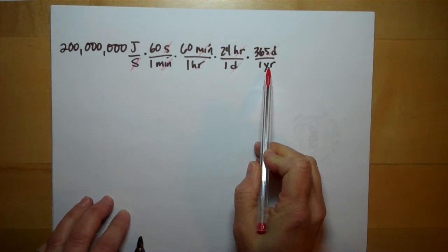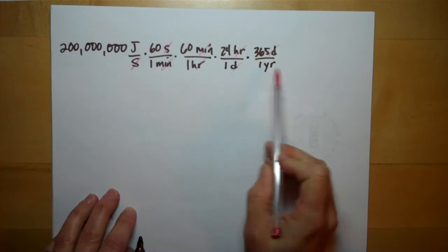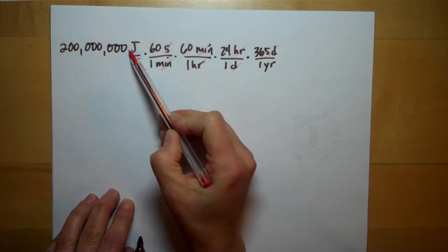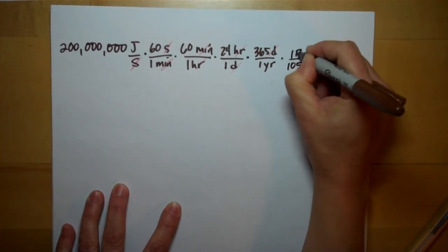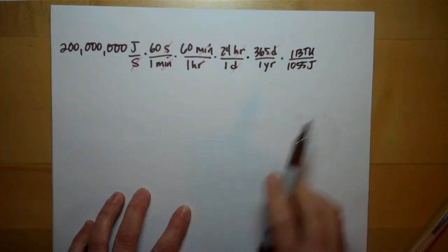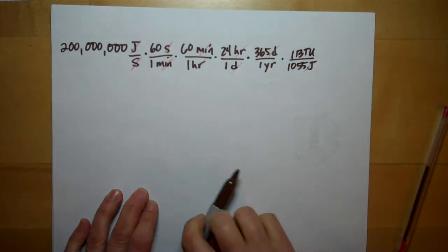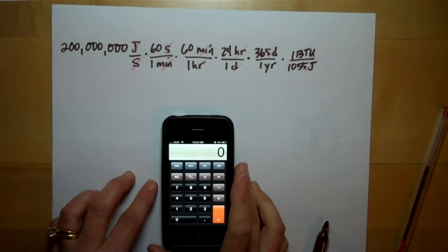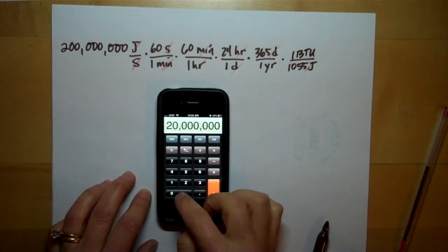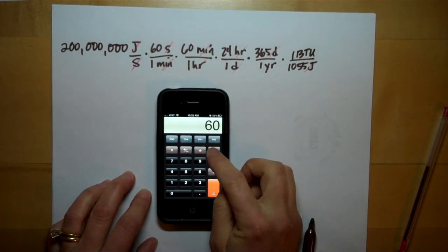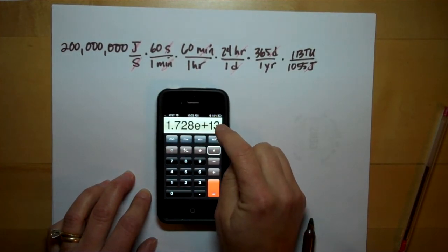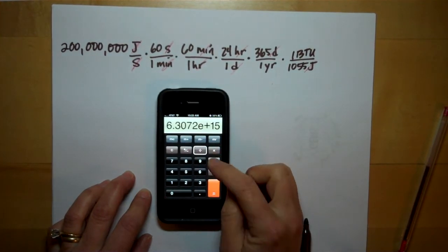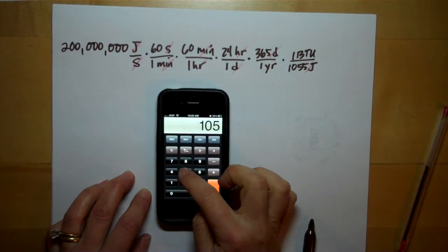We don't want to be at joules per year. We want to be at BTUs, because the problem goes on to describe the heat value of wood as 12 megaBTUs per ton. So we need to get to BTUs. And joules, remember, there's a direct conversion between joules and BTUs. There's 1,055 joules in one BTU. So our joules now cancel. Doing all this math, 200 million times 60 times 60 times 24 times 365 divided by 1,055.